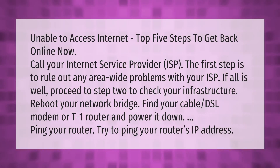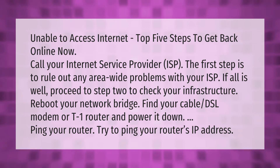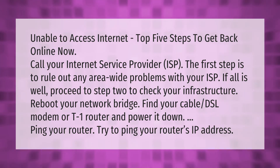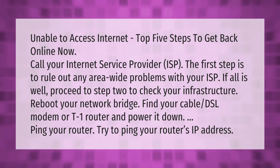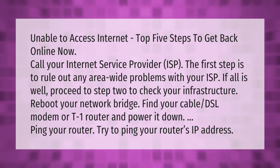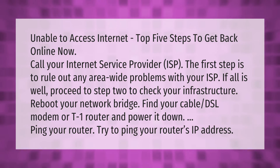Unable to access internet: top five steps to get back online. Step one — call your internet service provider (ISP) to rule out any area-wide problems. If all is well, proceed to step two to check your infrastructure: reboot your network bridge, find your cable, DSL modem, or T1 router and power it down. Then try to ping your router's IP address.